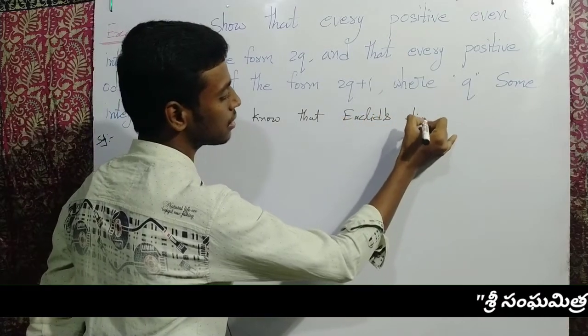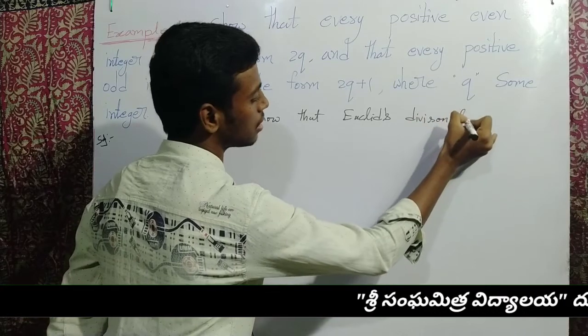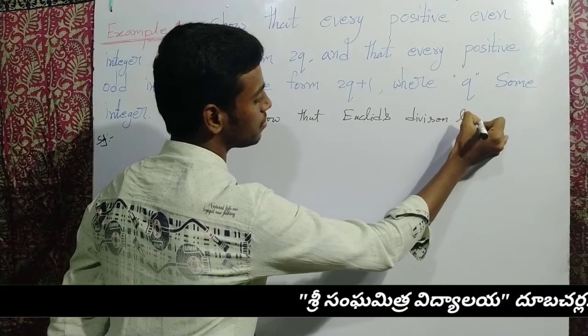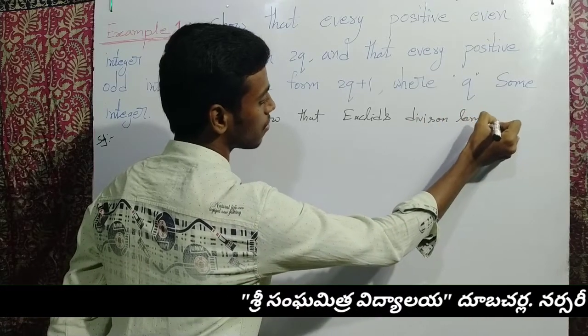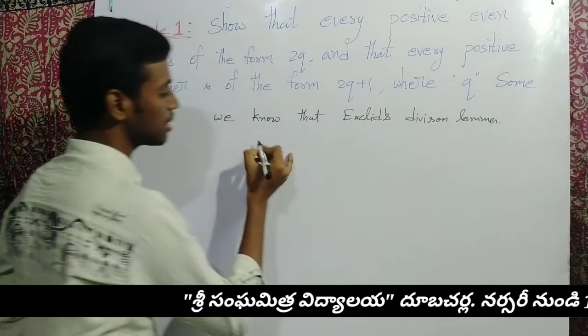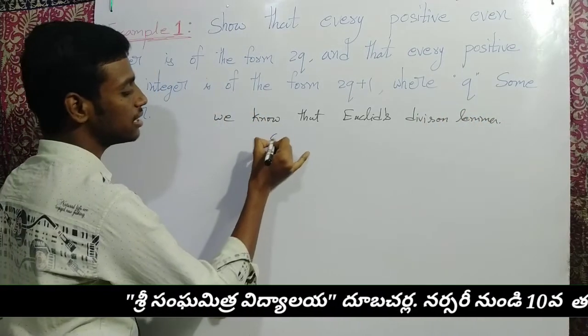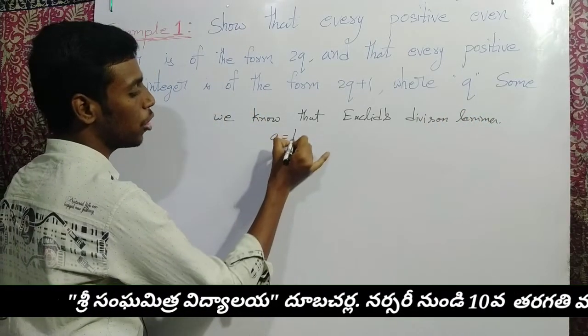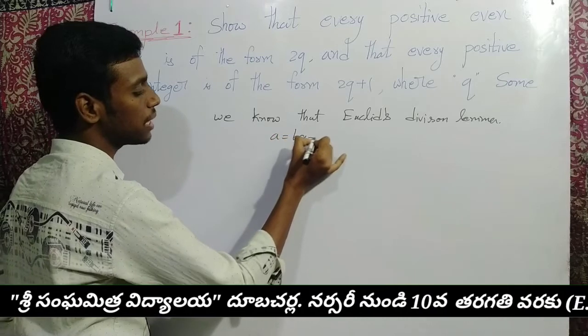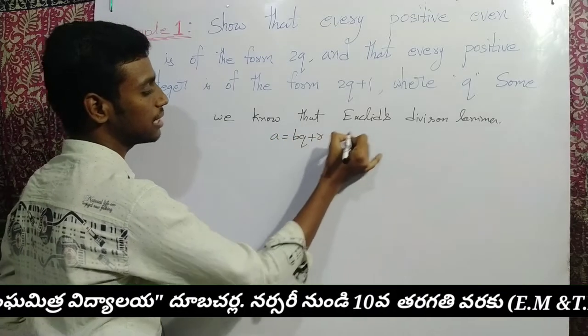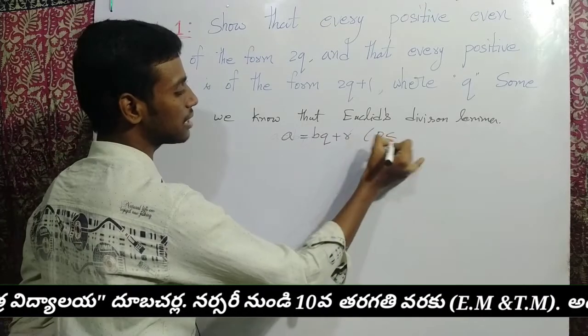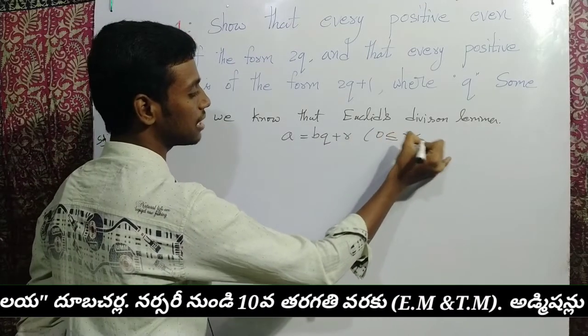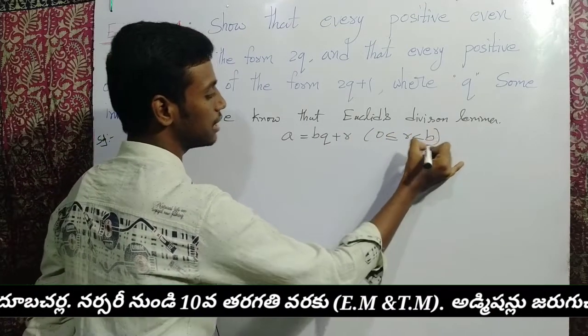Using Euclid's Division Lemma: a is equal to bq plus r, with the condition 0 less than or equal to r less than b.